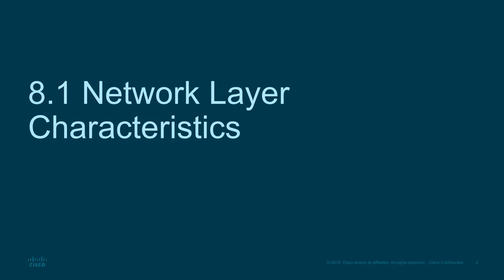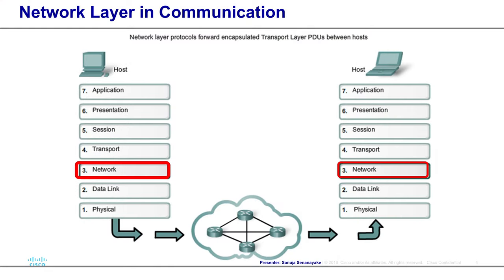Network layer characteristics. On the OSI model, the network layer is the third layer from the bottom — physical, data link, network, transport, session, presentation, and application. Network layer protocols forward encapsulated transport layer PDUs between hosts. The network layer is responsible for the transport of PDUs between hosts.